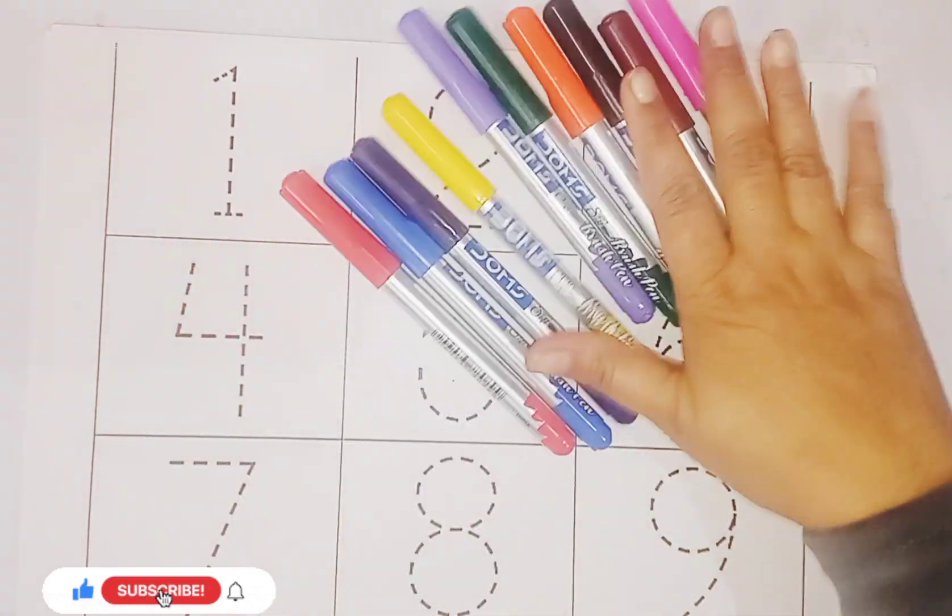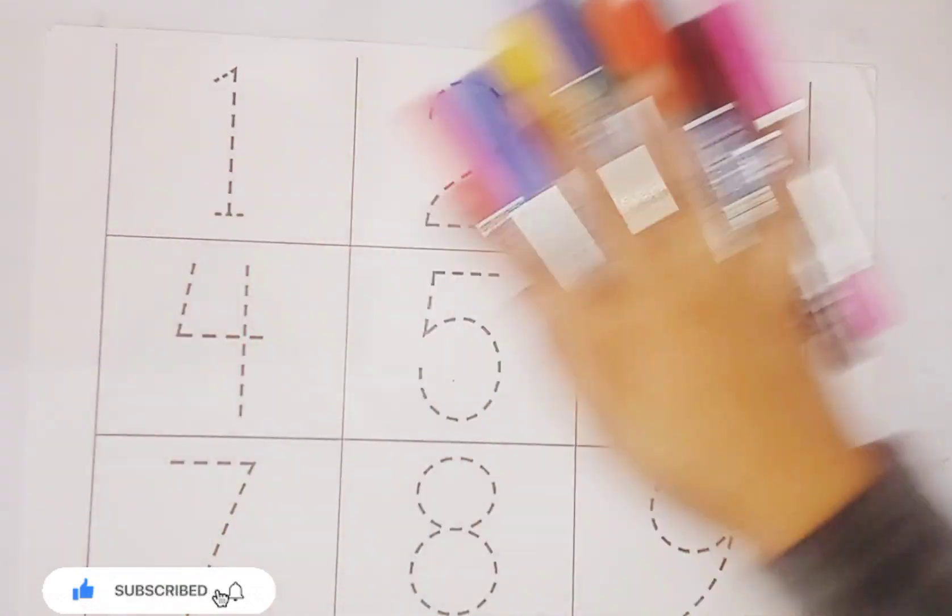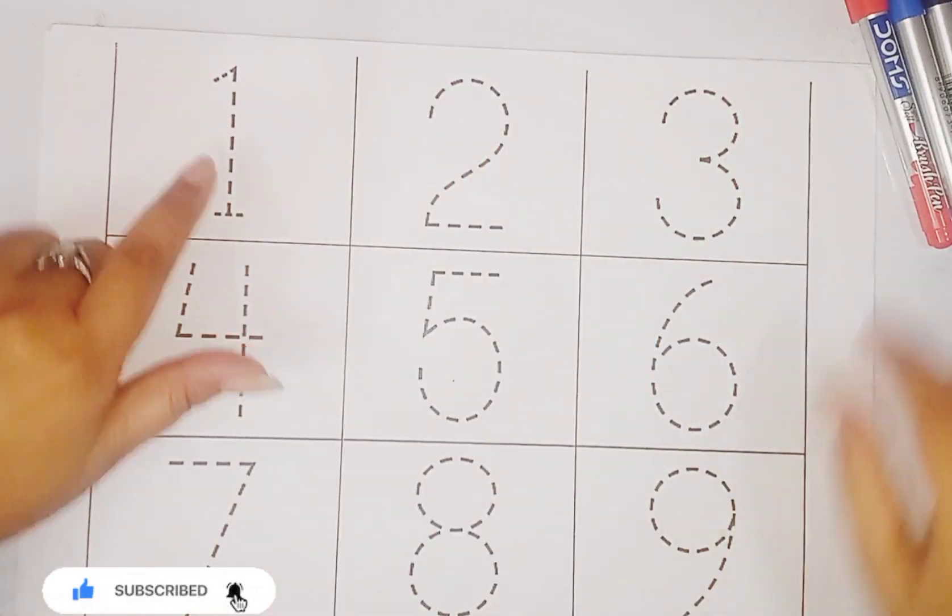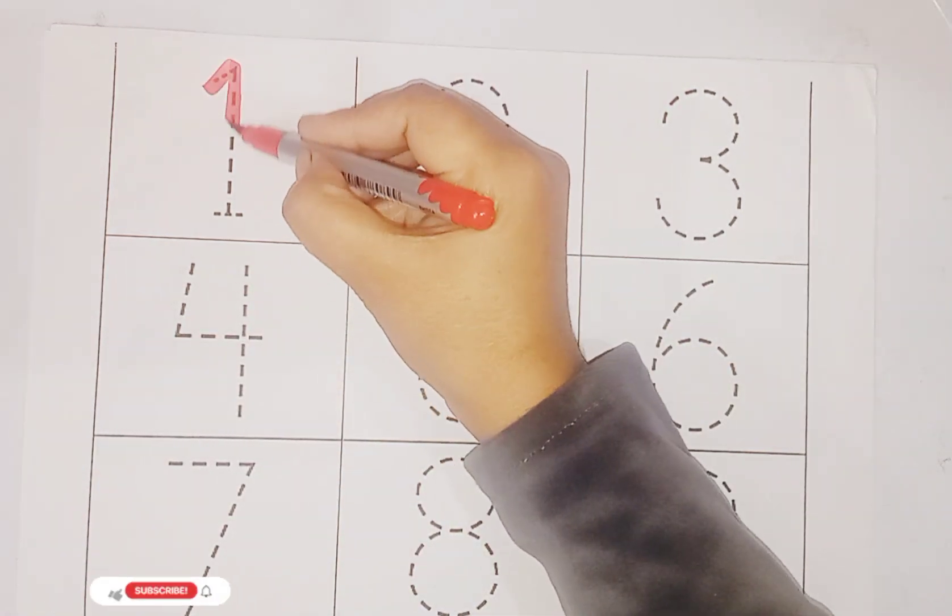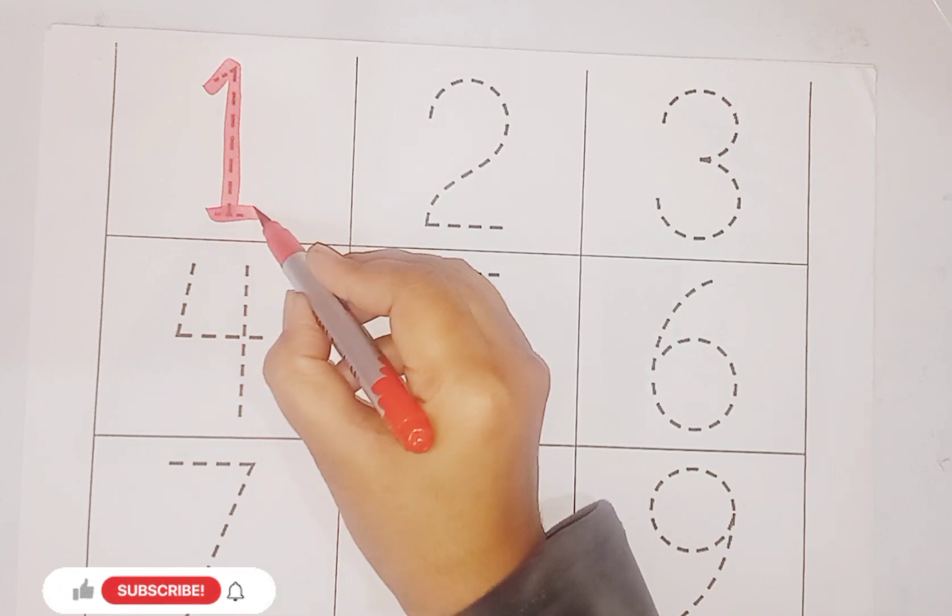These are colors. Now we learn number 1 to 9. Red color 1. This is number 1.